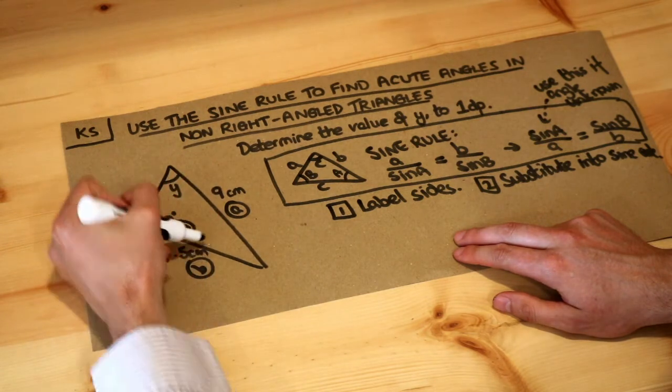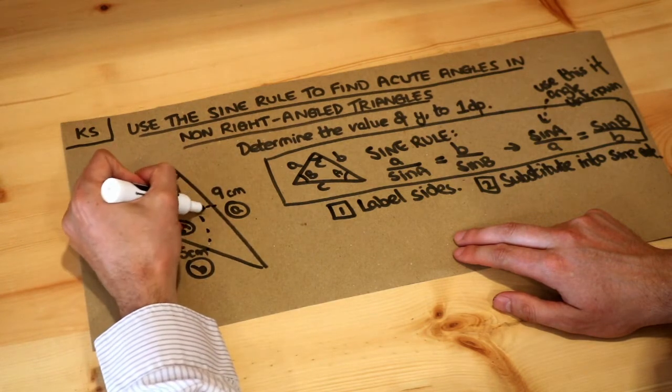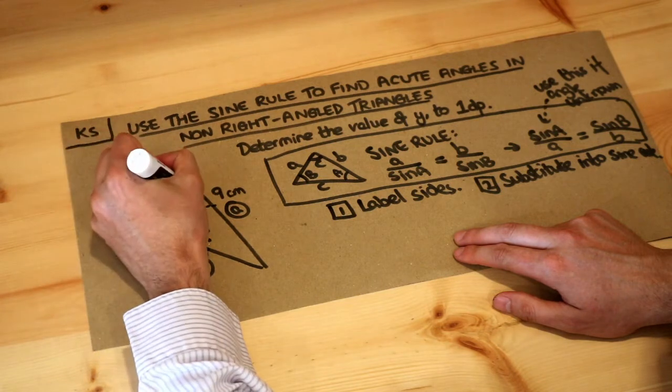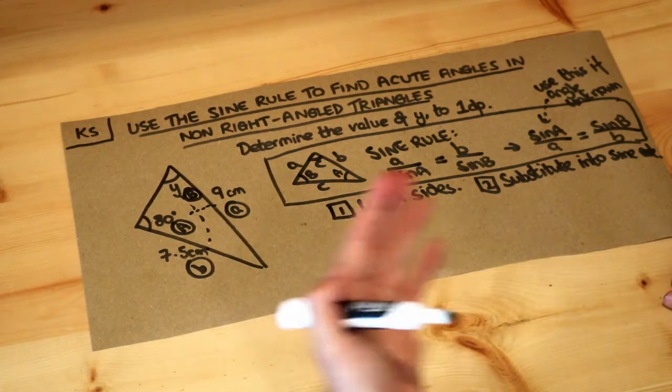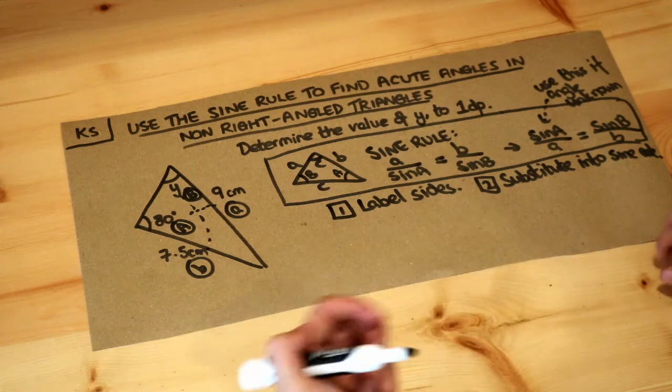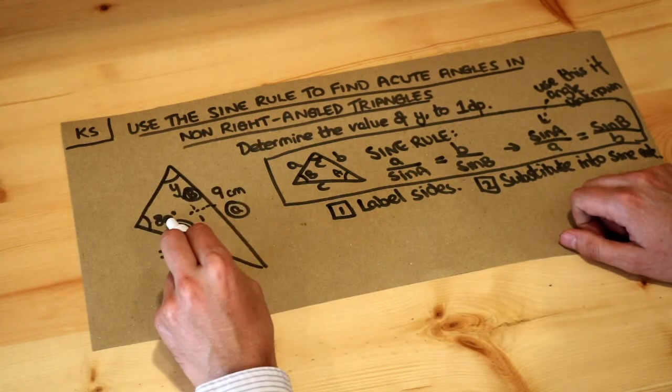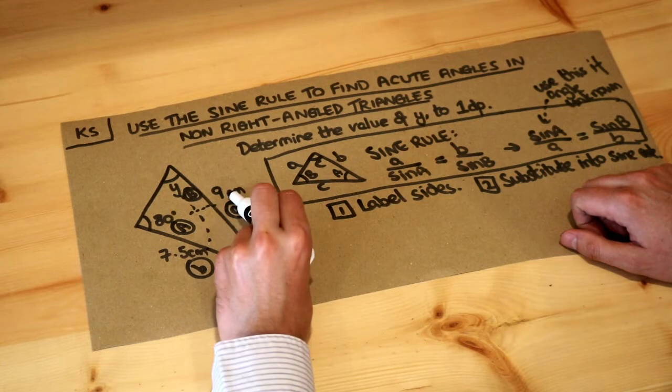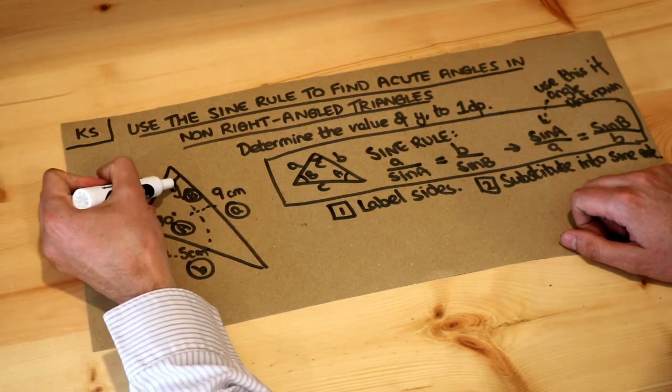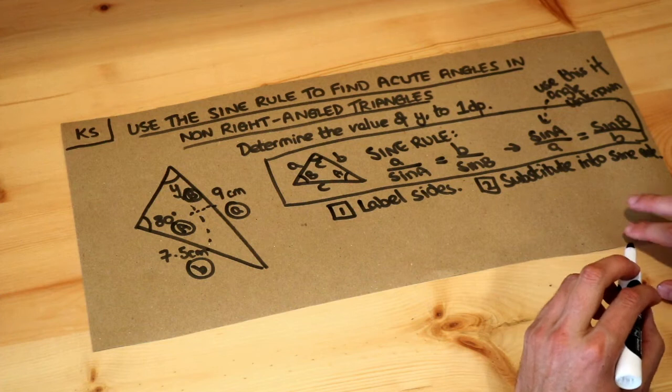In terms of the angles, opposite side a is angle capital A, and opposite side b is angle capital B. So we've labeled it, and remember we use the sine rule whether for unknown angles or unknown sides if you have these kind of side-angle opposite pairs. So we've got a side with its opposite angle, a side with its opposite angle, that's when we use the sine rule.